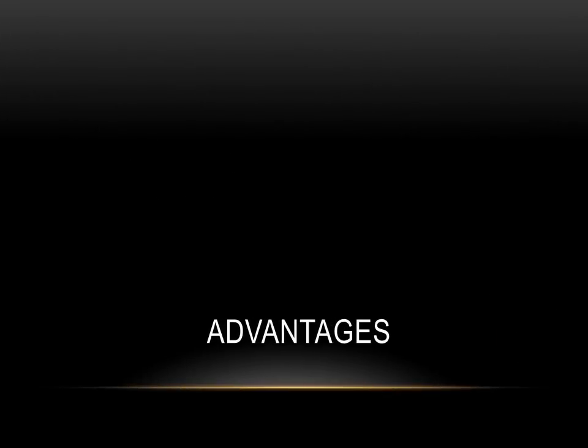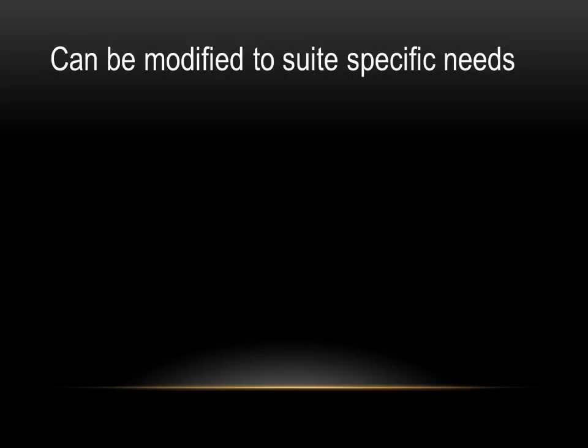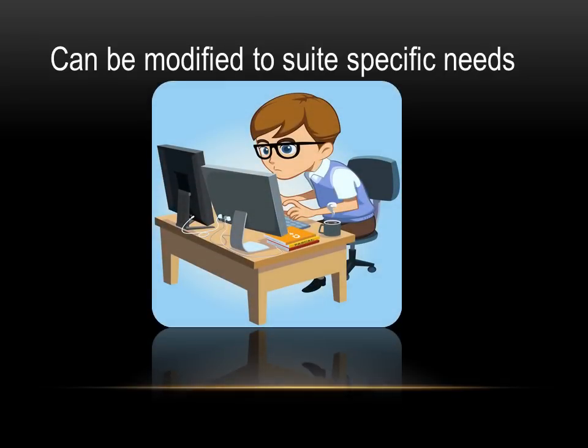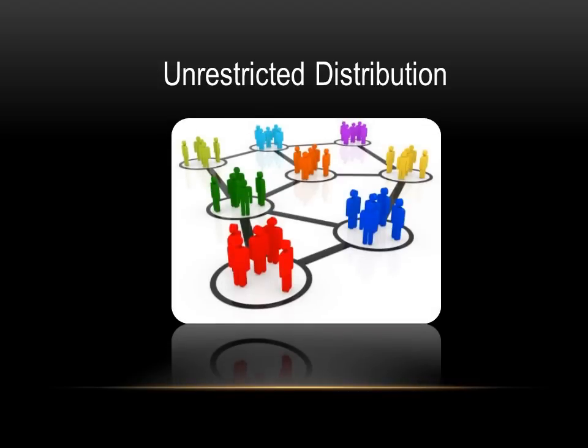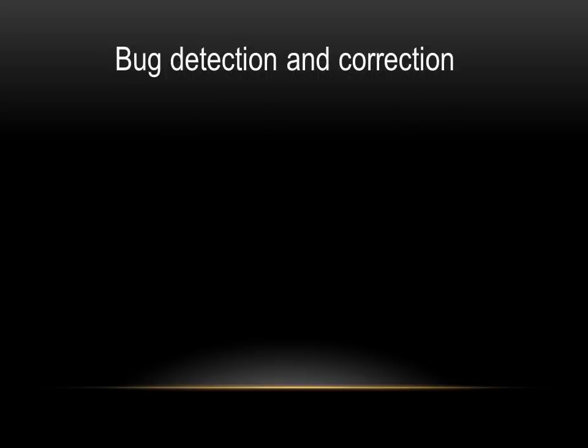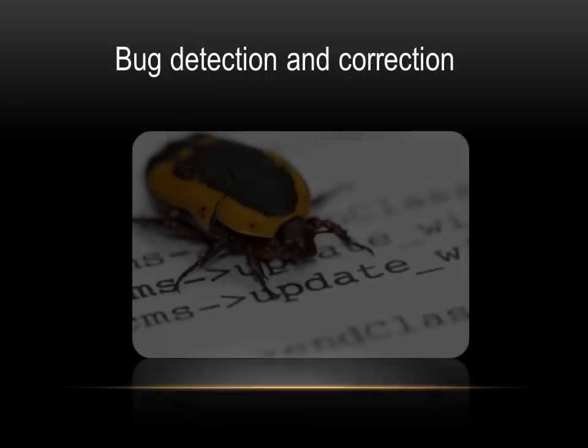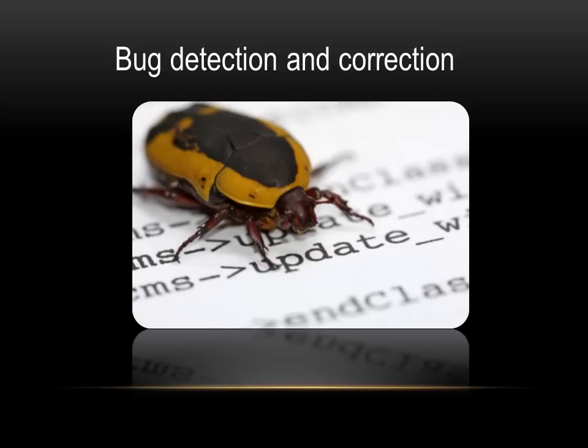Open source is highly advantageous. Possibly the biggest advantage of open source software is the fact that everybody has the right to modify the source code. This means that any number of people can become editors of the code. Open source code is also encouraged, so bug fixes can be redistributed instantly instead of having to wait for a newer release.